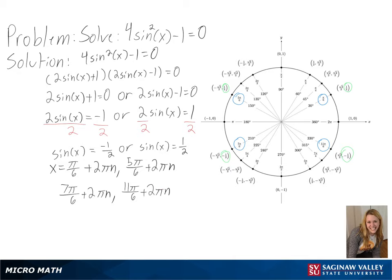We can also further simplify this to get π over 6 plus πn and 5π over 6 plus πn, since adding π will give us our 7π over 6 and 11π over 6. And with that, we have solved our trig equation.